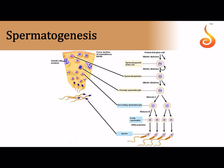Moving on to sperm formation: in the testis lobules there are one to three highly coiled structures called seminiferous tubules. Inside the seminiferous tubule are male germ cells called spermatogonia. Some spermatogonia stop dividing by mitosis and enter meiotic division — these are called primary spermatocytes. The primary spermatocyte undergoes meiosis I to form two equal-sized secondary spermatocytes, each of which undergoes meiosis II to form two haploid spermatids — a total of four spermatids from one spermatogonium.